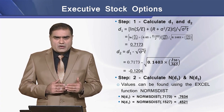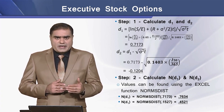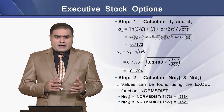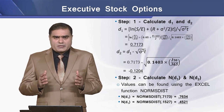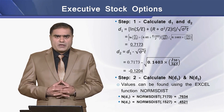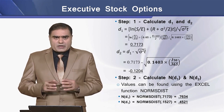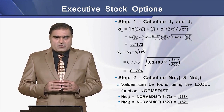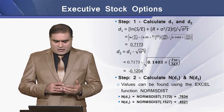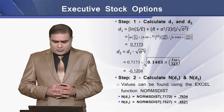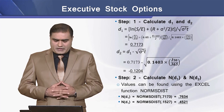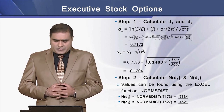In step 2, we need to determine the value of N(D1) and N(D2), which are basically the probability that the normal distribution random variable will be less than or equal to the value of D. Using the normal distribution function in Excel, the value of N(D1) is 0.7634 and N(D2) is 0.4321.